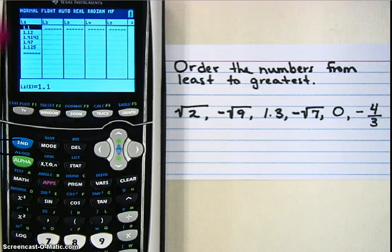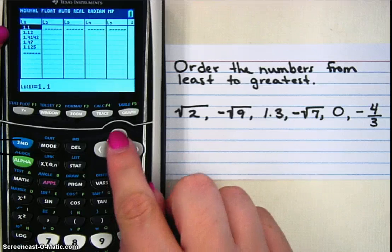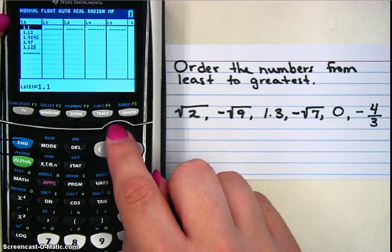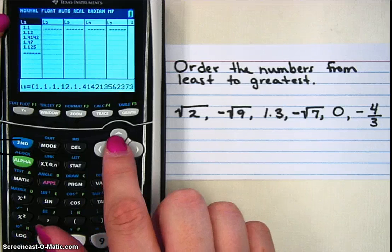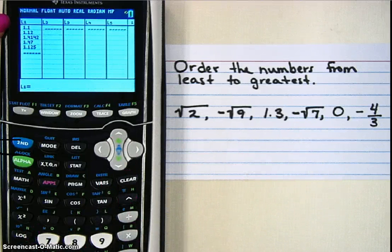Now you'll notice I already have some numbers in list one. I need to clear that out. So to do that, if you have numbers in your calculator, go up to L1 using the up button, hit clear, and then enter, and it will get rid of all those numbers in the list.